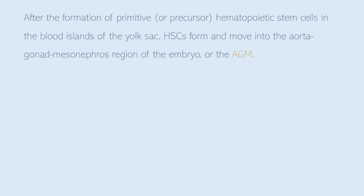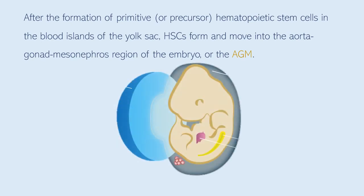After the formation of the primitive, or sometimes called the precursor, hematopoietic stem cells in the blood islands of the yolk sac, hematopoietic stem cells form and move into the aorta-gonad-mesonephros region of the embryo, or the AGM.